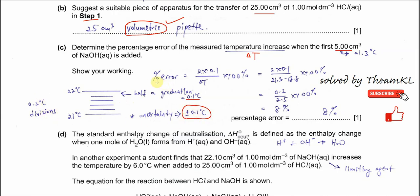To calculate the percentage error, we use the uncertainty of 0.1°C. Because it involves two readings — initial and final — we multiply by two. So: (2 × 0.1) / 2.5 × 100 = 8%. The percentage error is 8%.